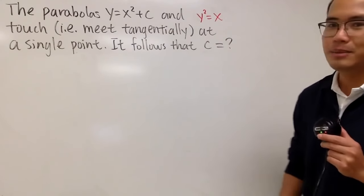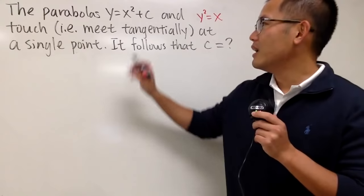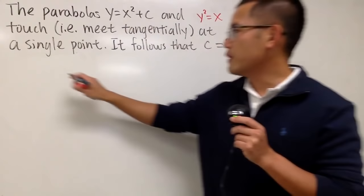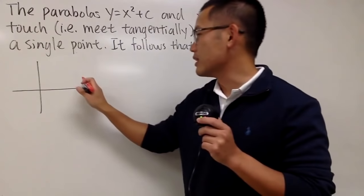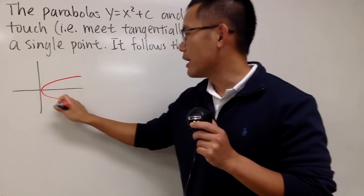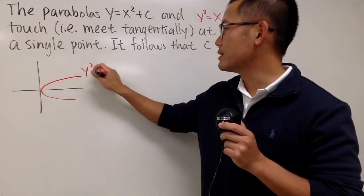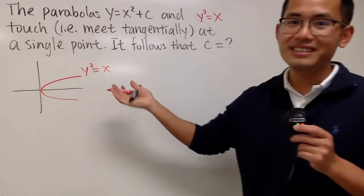This reminds me of the good old AP calculus equations. Let me give you guys a graph for this. Let me do y squared equals x, because this is just a sideways parabola. It has no weird numbers that we don't know. So this is it.